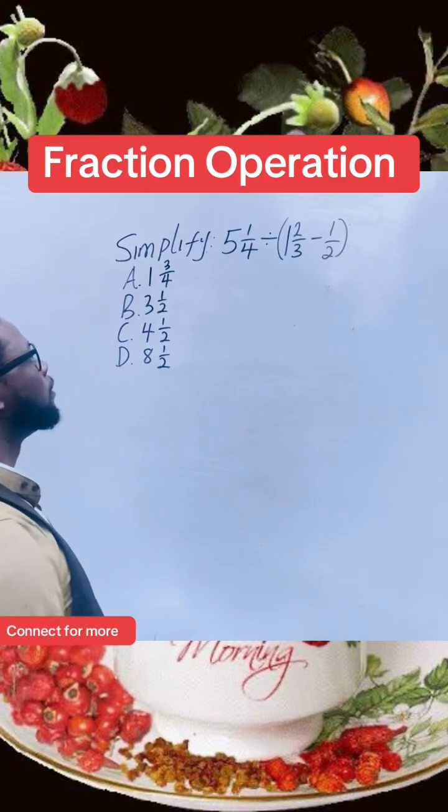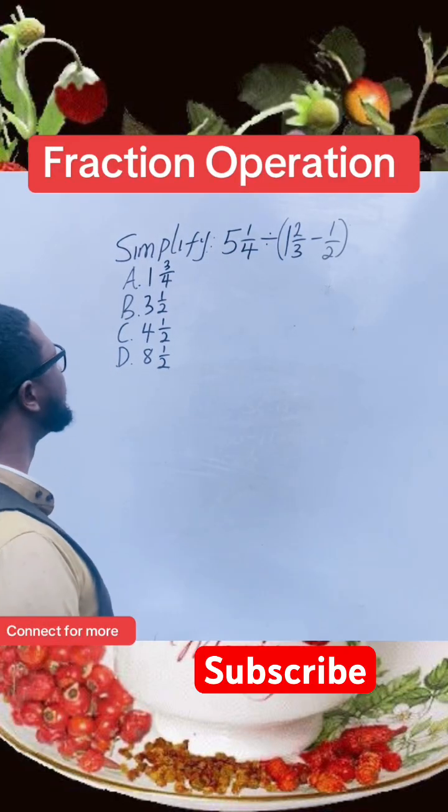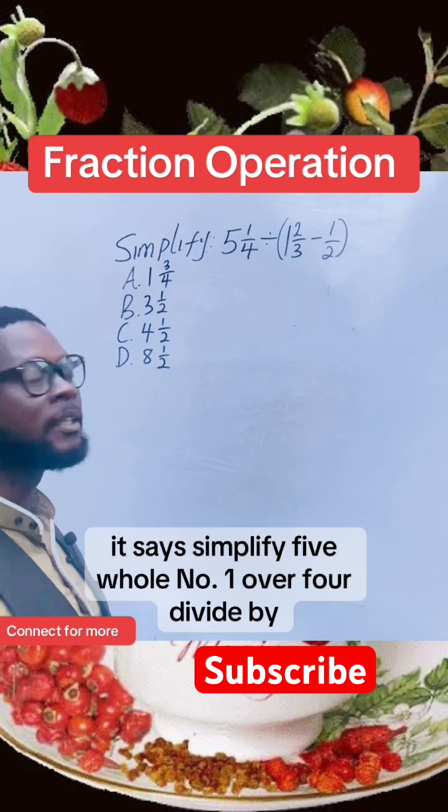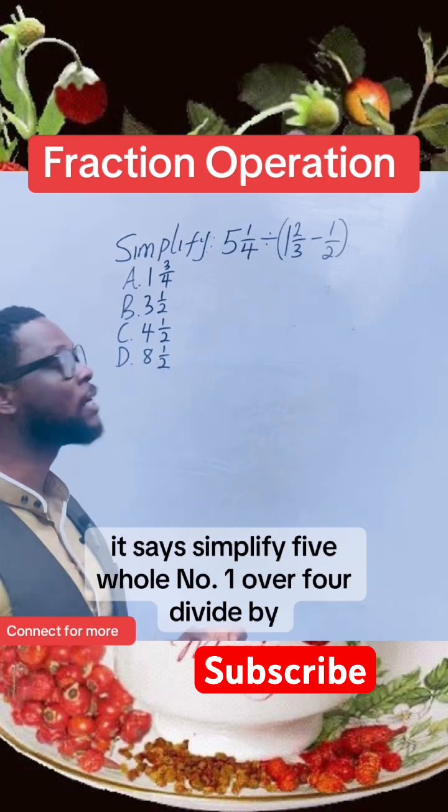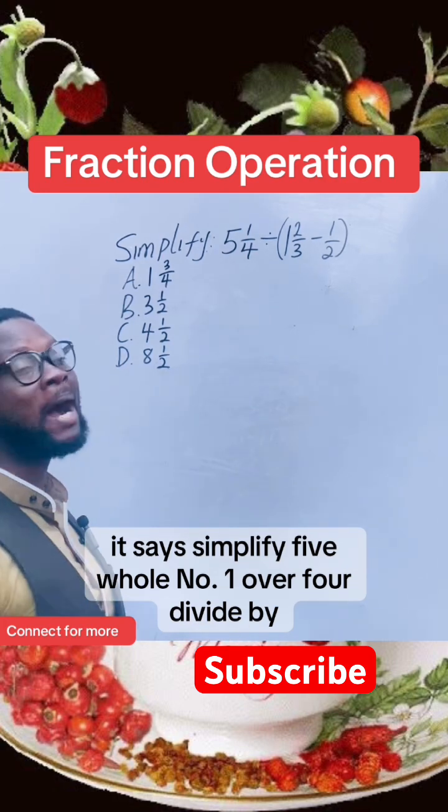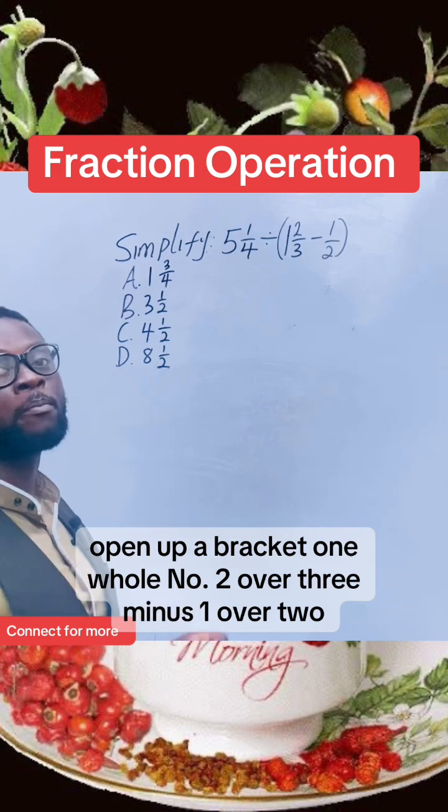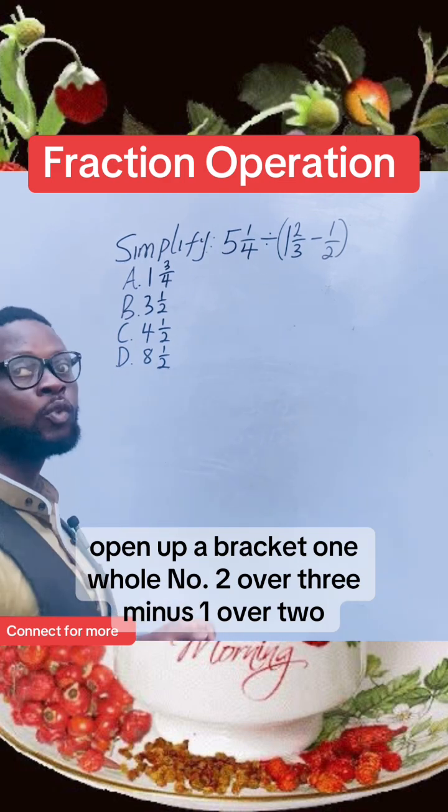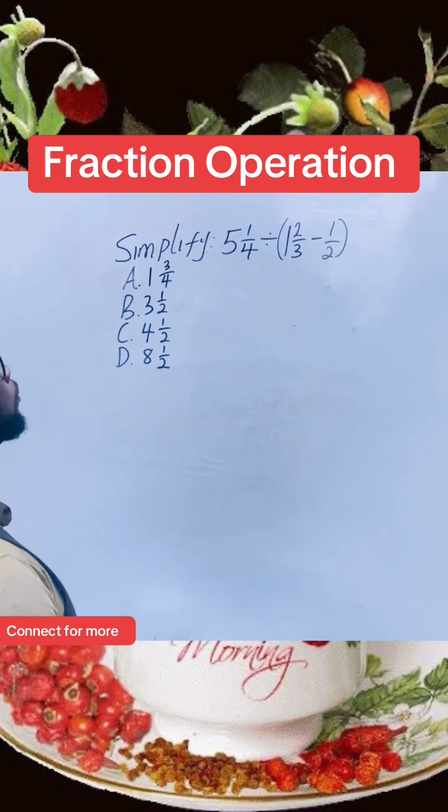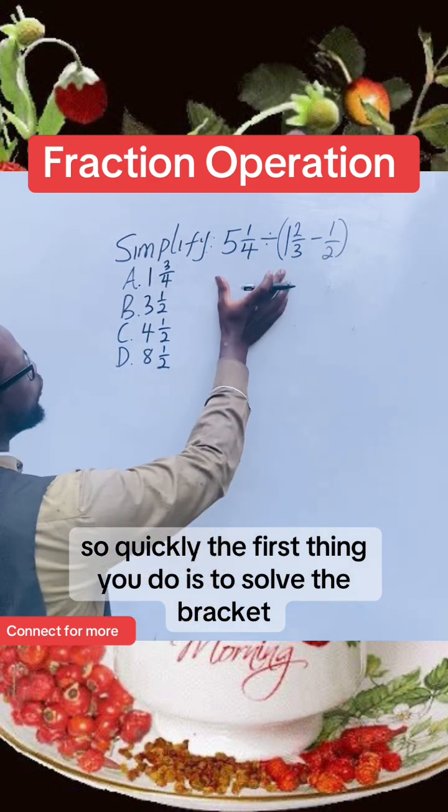All right, hello guys. Let's check out this question: simplify 5 1/4 divided by open bracket 1 2/3 minus 1/2. So quickly, the first thing you'll do is to solve the bracket, the parentheses first.